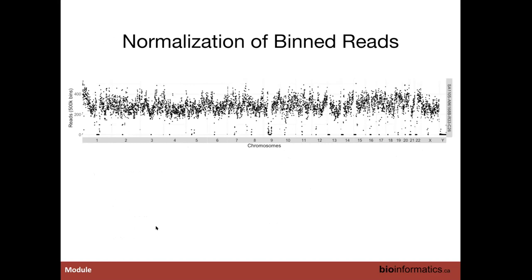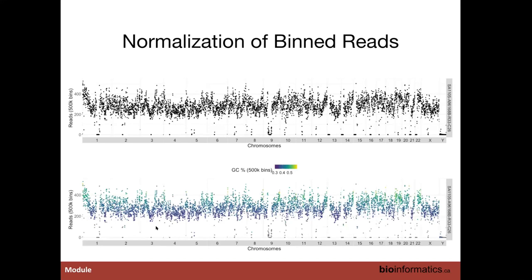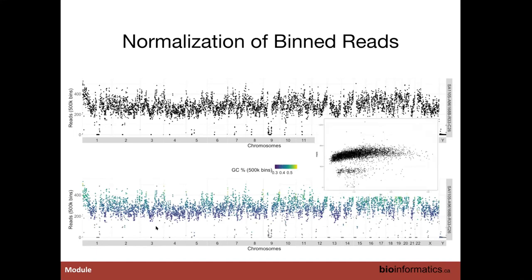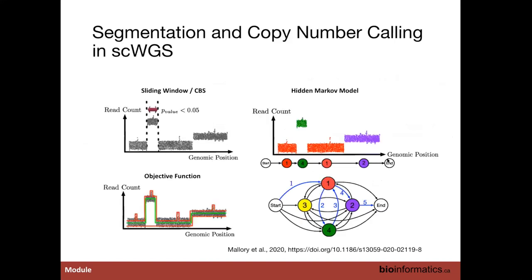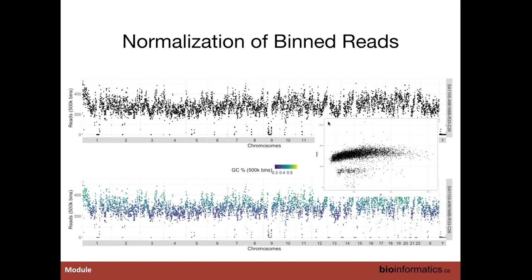To give you an idea of how important GC correction is: if you overlay the GC content of each bin on one of our DLP cells, you can see a strong relationship. Looking at that relationship as a scatter plot — reads on the y-axis and GC on the x-axis — you see this Nike swoosh shape that shows the bias characteristic of sequencing. This bias is usually corrected by a polynomial or LOWESS regression fit to the curve, effectively regressing out the contribution of GC to biases in read depth coverage.